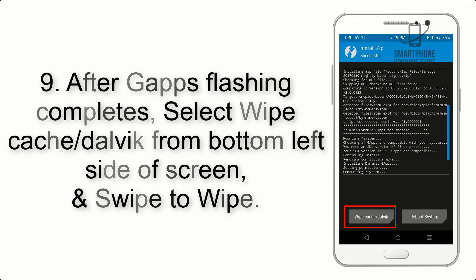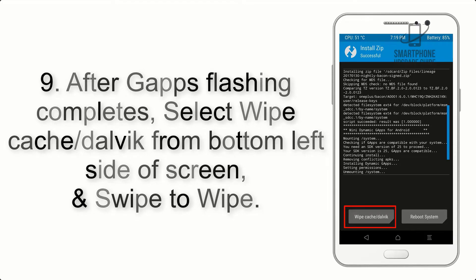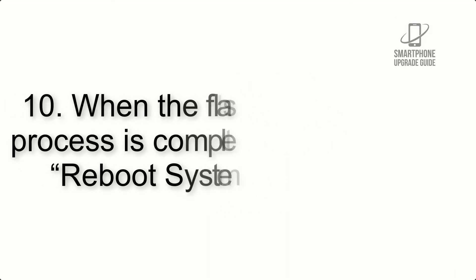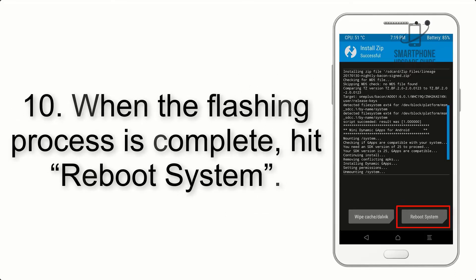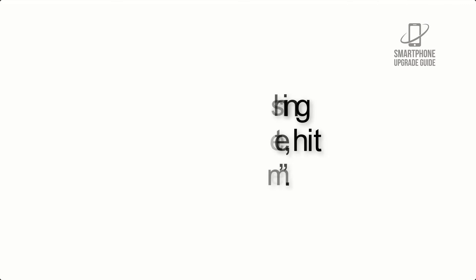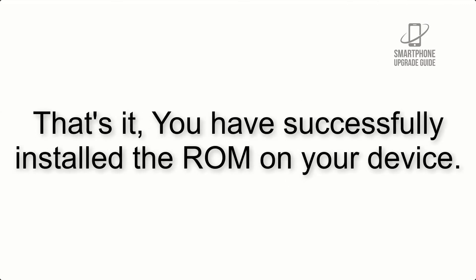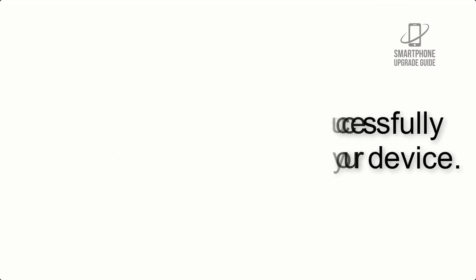Step 9: After Gapps flashing completes, select Wipe Cache and Dalvik from the bottom left side of the screen and swipe to wipe. Step 10: When the flashing process is complete, hit Reboot System. That's it — you have successfully installed the ROM on your device.